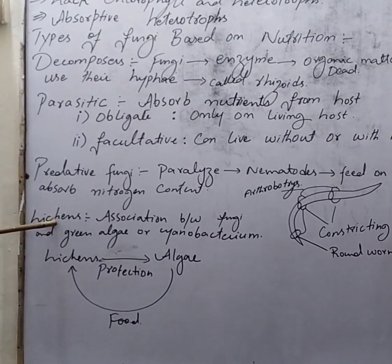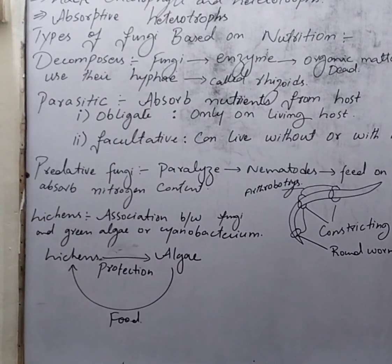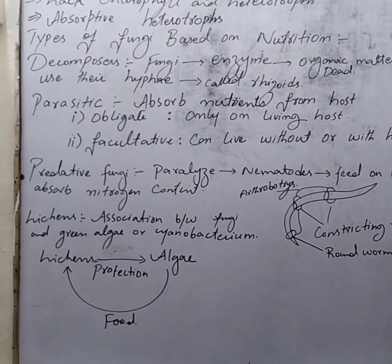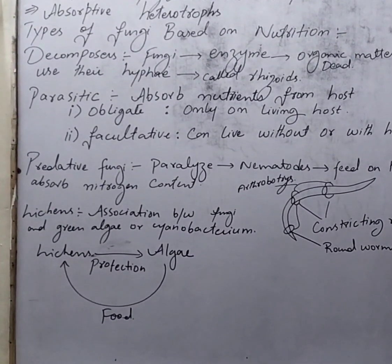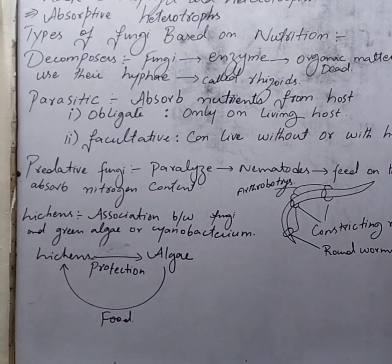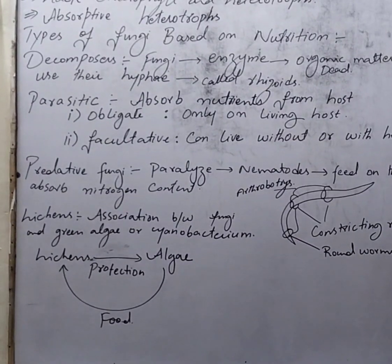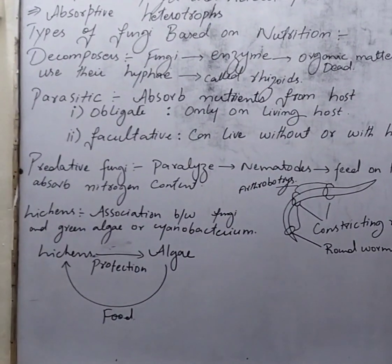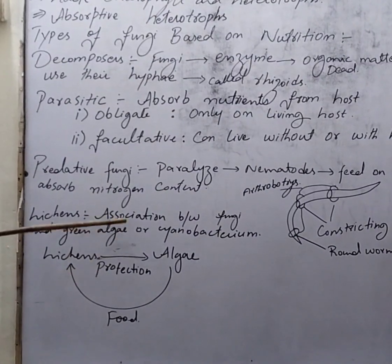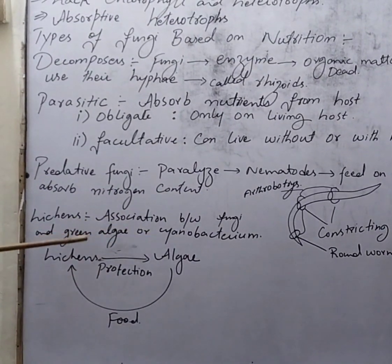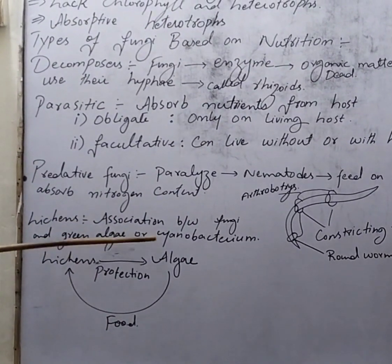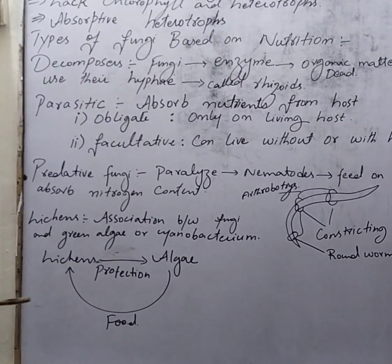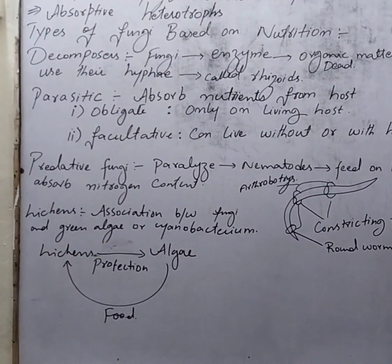Another example is the lichen association. There are many fungal species associated with algae — this relationship causes no harm to either partner. In Britain, algae also benefit from this association. The algal partners include species of green algae and cyanobacteria. These partnerships form what is known as lichen.